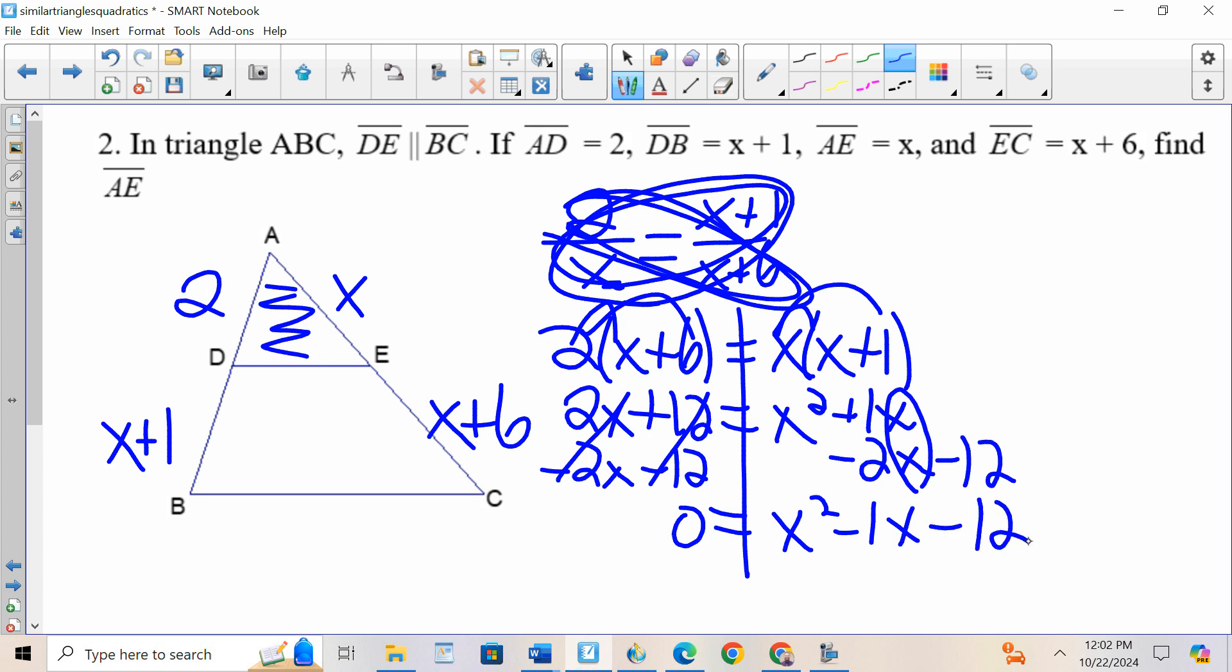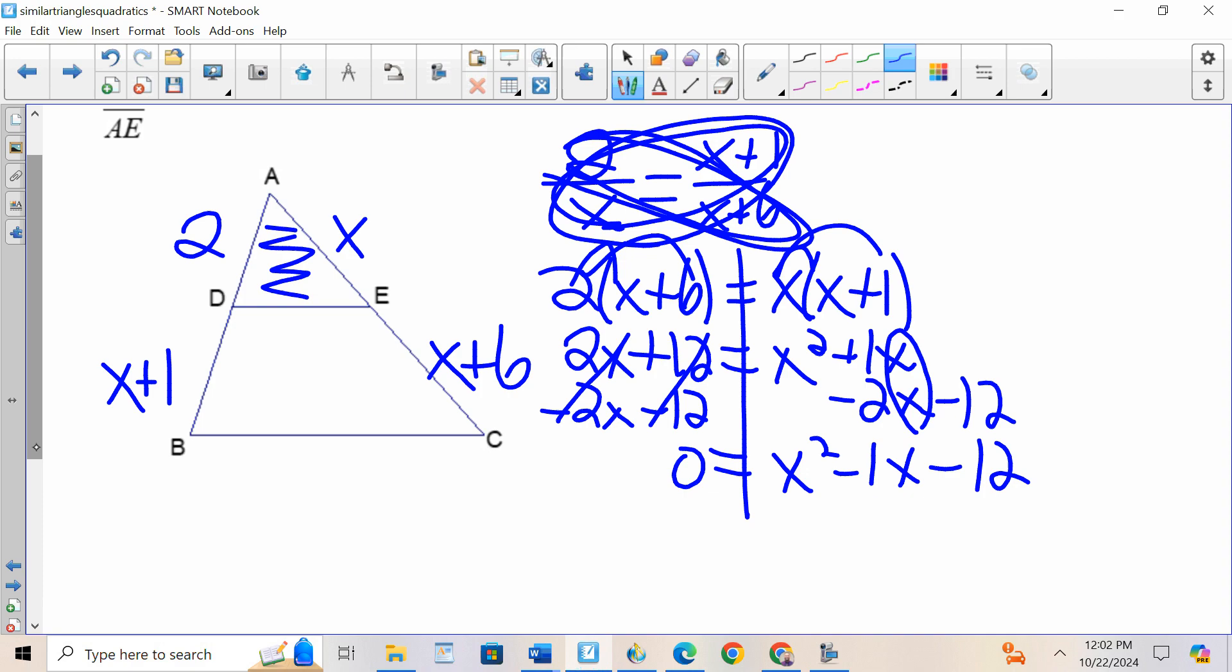Party time, bubbles factoring, there's your bubbles, your two sets of parenthesis, X and X. First sign comes down, negative and a negative is a positive. I need to multiply to 12, so I can list my factors of 12. 1 and 12, 2 and 6, 3 and 4.